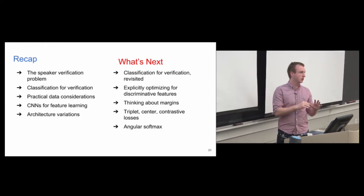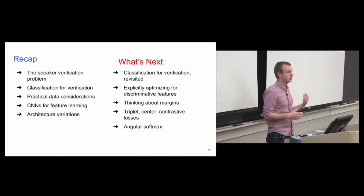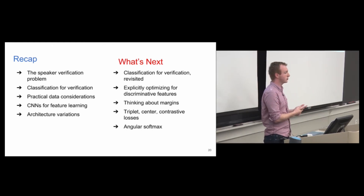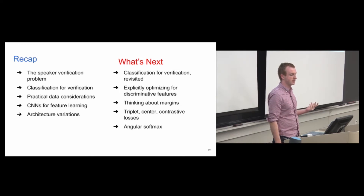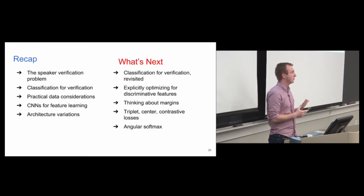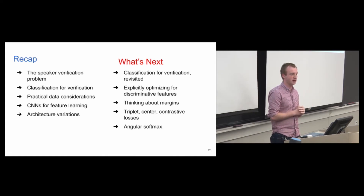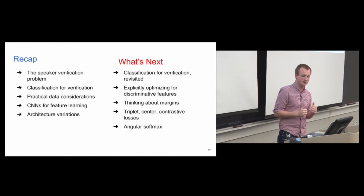Let's recap what we went through: we went through the speaker verification problem, talked about using classification for verification using transfer learning, talked about some practical data considerations in this task, convolutional nets for feature learning, as well as some useful architectures. Next, we're going to revisit classification for verification — why does it work, why can we get away with this. We're going to talk about how we can explicitly optimize for more discriminative features, think about margins, go over some other losses that deal with optimizing for discriminative features, and lastly touch on something called Angular Softmax, which is a really interesting variant of the softmax loss with a neat geometric interpretation.